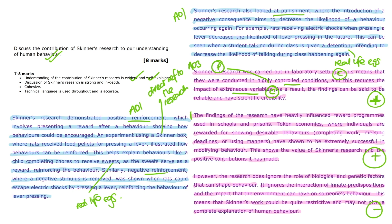This structure is repeated in the second paragraph. Again, a strength is identified — the point that the research has influenced reward programmes. It explains this and gives examples of token economies being used in schools and prisons, and again gives the consequence that it shows the massive positive contributions Skinner has made. In the final evaluation paragraph, a limitation is identified — that the research ignores the role of biological and genetic factors. It explains this by outlining how it ignores innate predispositions or the influence of the environment, and gives the consequence that Skinner's work could be quite restrictive.